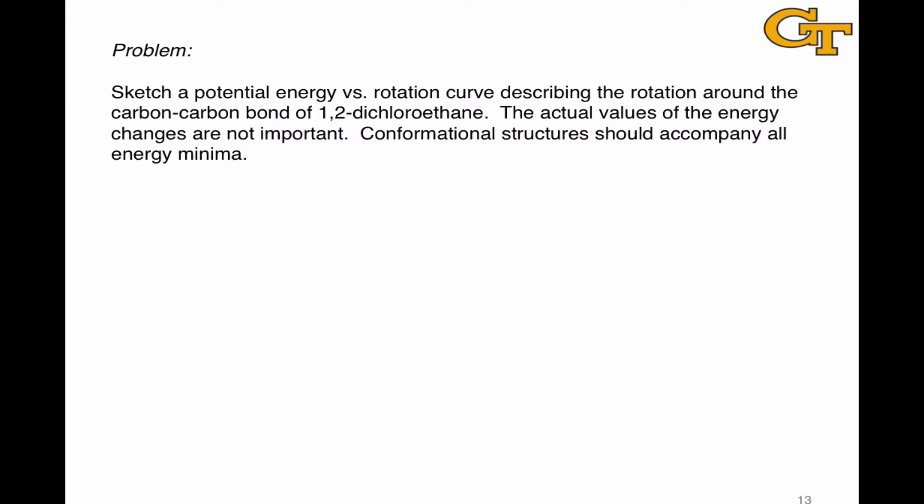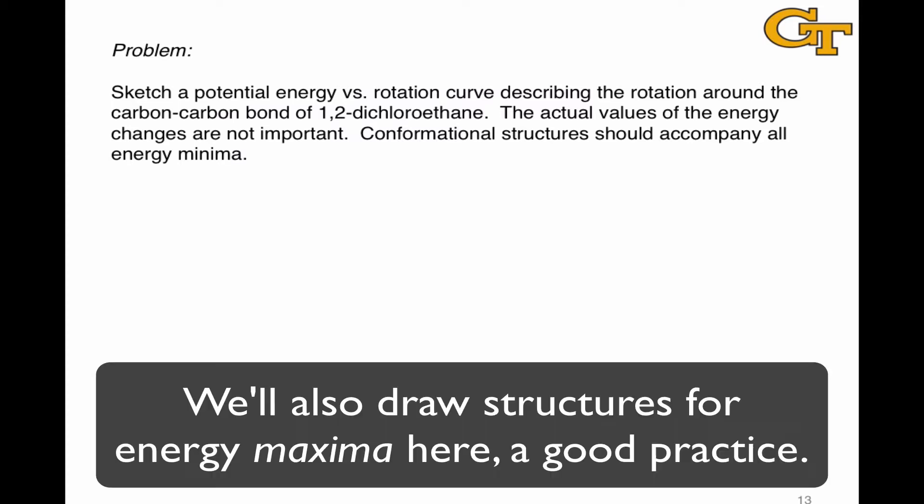In this problem we're asked to sketch a potential energy versus rotation curve that describes how the potential energy of 1,2-dichloroethane varies as the rotational angle of the molecule varies. The problem says that the actual values of the energy changes are not important, but that conformational structures should accompany all energy minima.